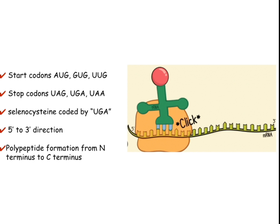Remember, this is a very special and exceptional case — selenocysteine is coded by the UGA stop codon. Generally, the translation process goes from the 5' to the 3' direction. As you can see in the mRNA here, the ribosome moves from the 5' prime end to the 3' prime end. The polypeptide chain is synthesized from N-terminus to C-terminus — first the amine terminal is synthesized, and ultimately the carboxyl terminal is synthesized.